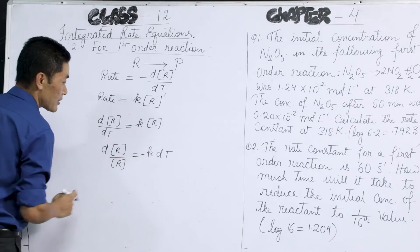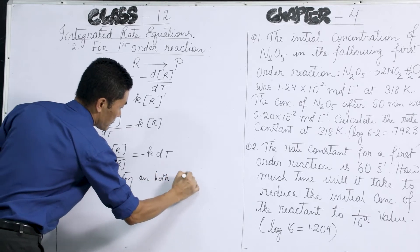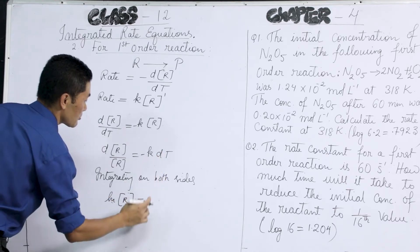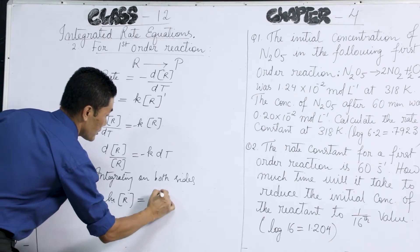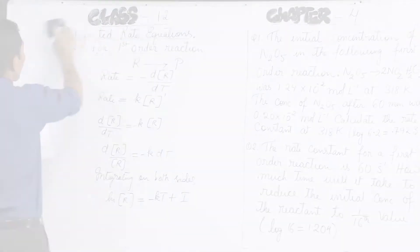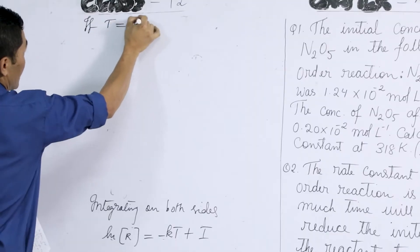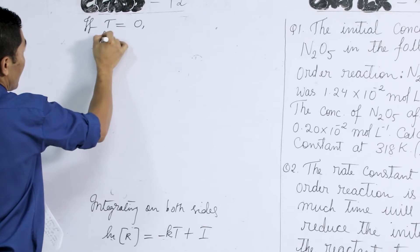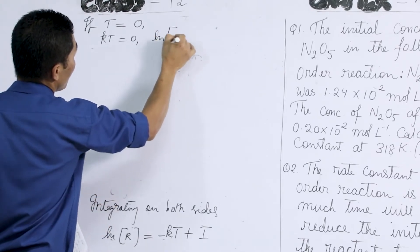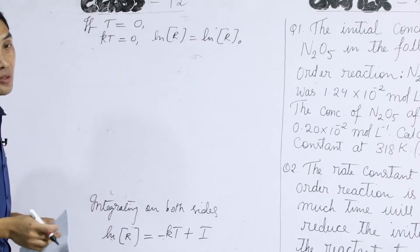Now if we integrate both sides, integration of dr/R will give us log R, and integration of minus k·dt will give us minus kt plus I, the integration constant. Now if time t is equal to 0, then kt becomes 0 and the initial and final concentrations become equal. So log R will be equal to log R₀ — the final concentration and the initial concentration will be the same at time zero.